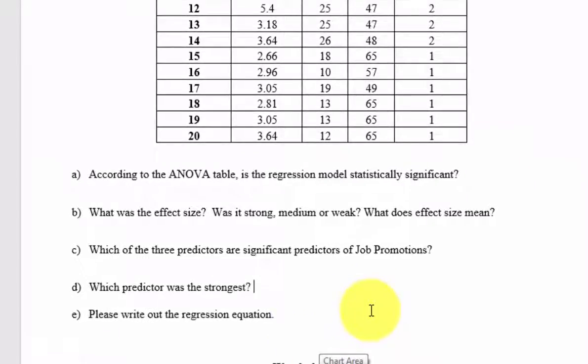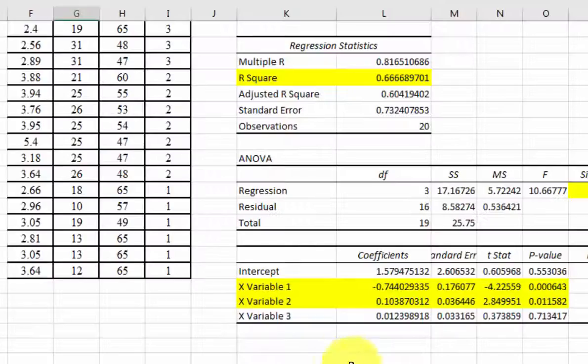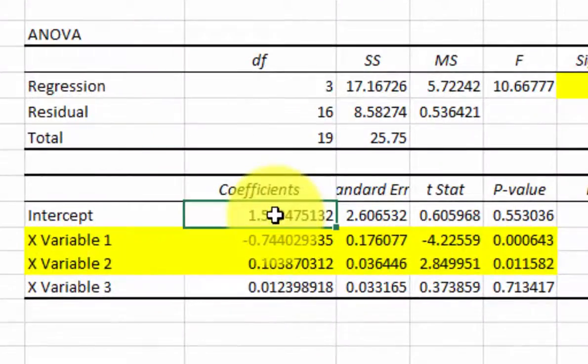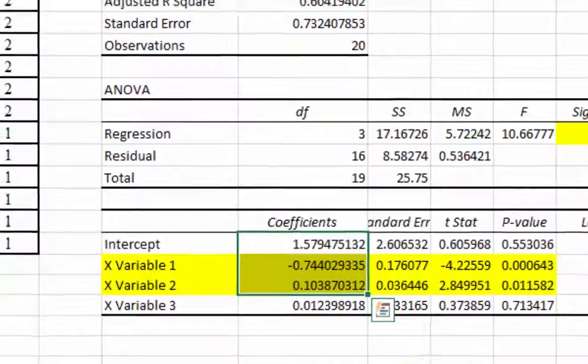And what else we got here? Write out the regression equation. We will do that. We will use these values. We're going to use the coefficients right here. The intercept is your constant. So let me go ahead and put all that stuff in there. But that's all you need to know right now.